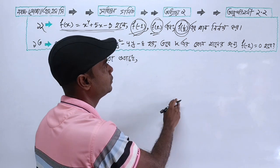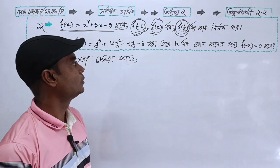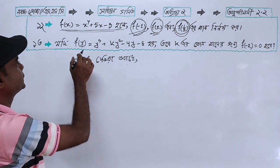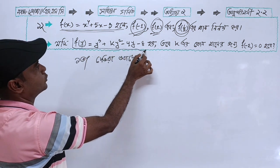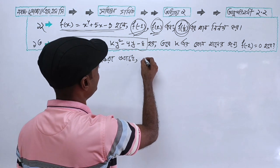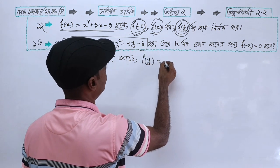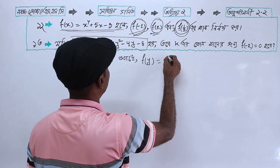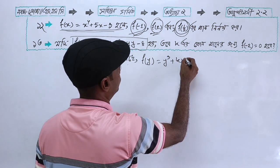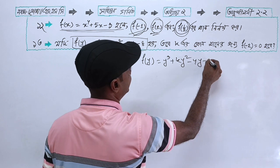For the next problem, we have a function where the condition gives minus 4y minus 8, which is equal to 0, and function of minus 2 is equal to 0. So we have the function f(y) equals y cubed plus k times y squared minus 4y minus 8.